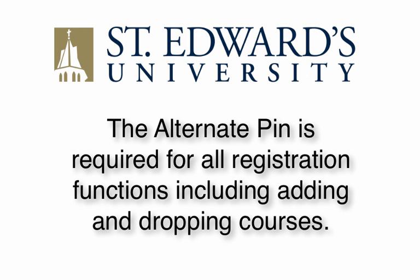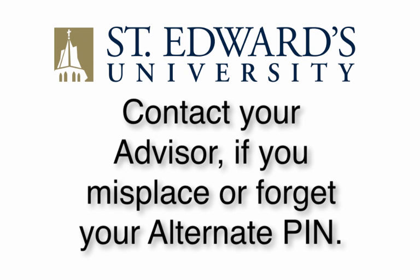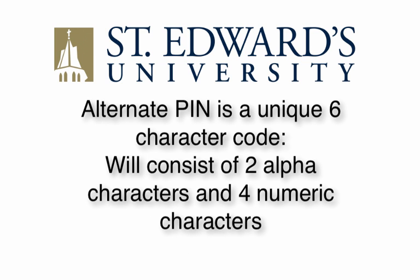The alternate PIN is required for all registration functions including adding and dropping courses. Should you misplace or forget your alternate PIN, you will need to contact your advisor. The alternate PIN is a unique six character code which will be given to traditional undergraduate students during the advising session. Alternate PINs will consist of two alpha characters and four numeric characters which will define the term of use.